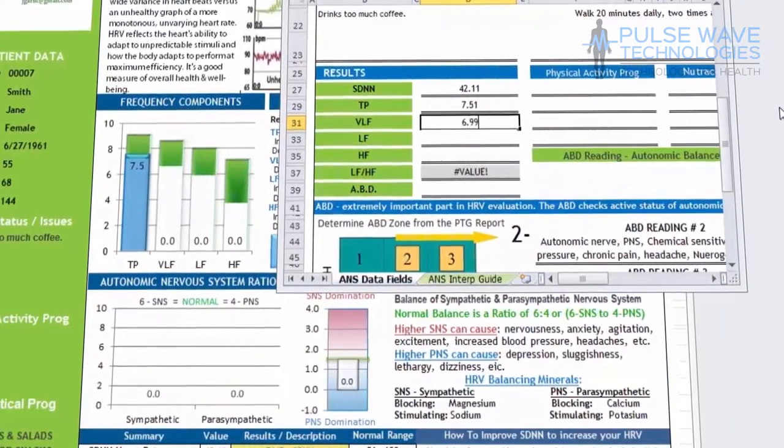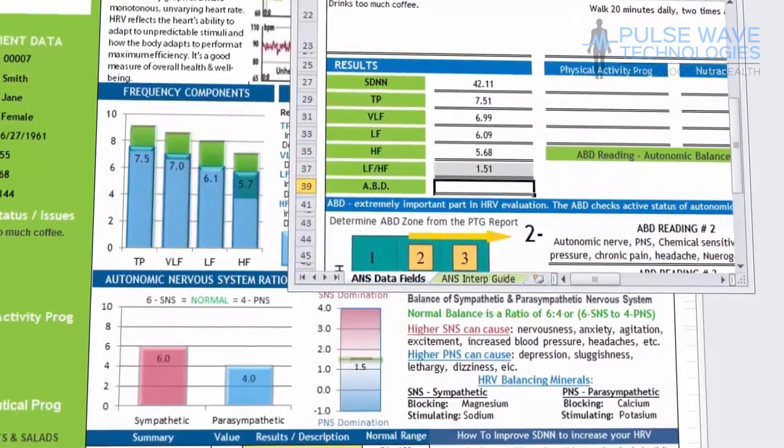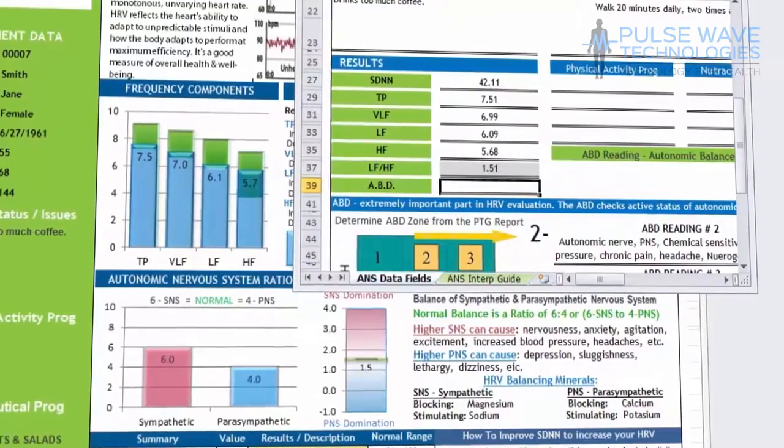The interpretive guide automatically calculates the high frequency-low frequency ratio, which appears automatically when you fill in both the high frequency and low frequency values.